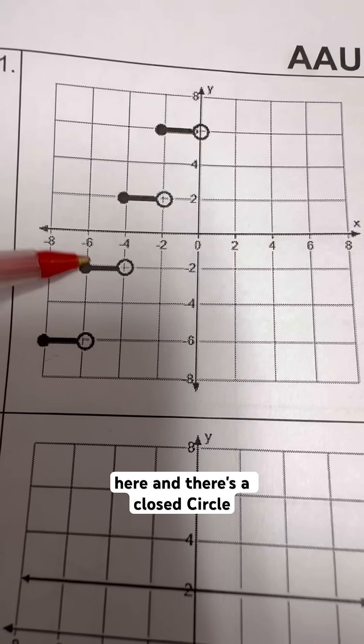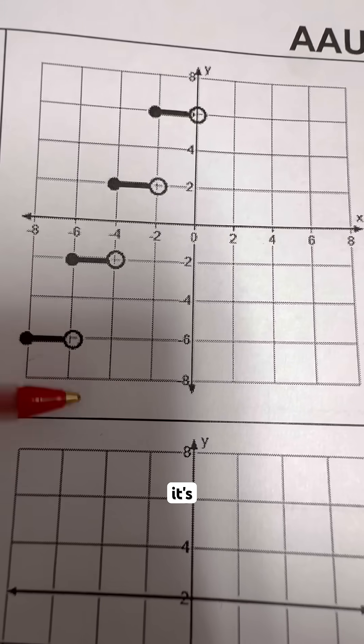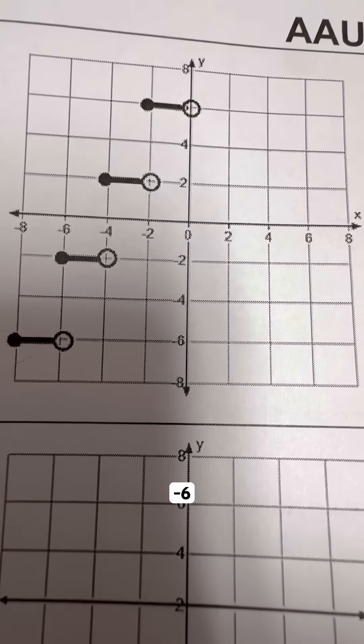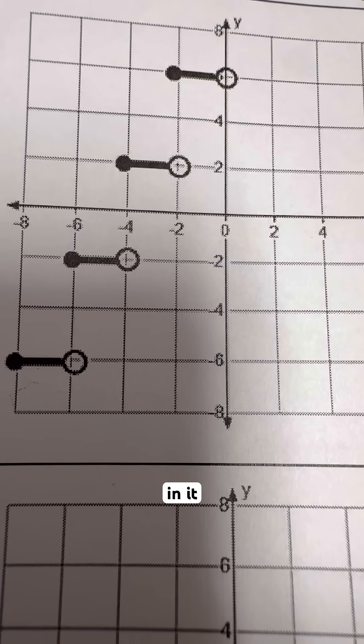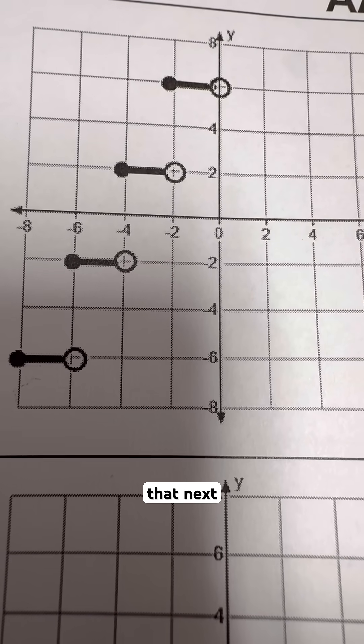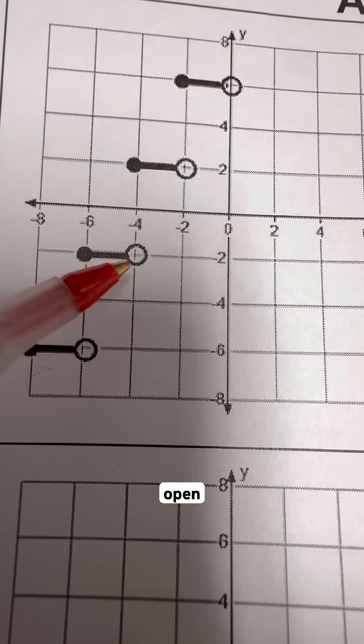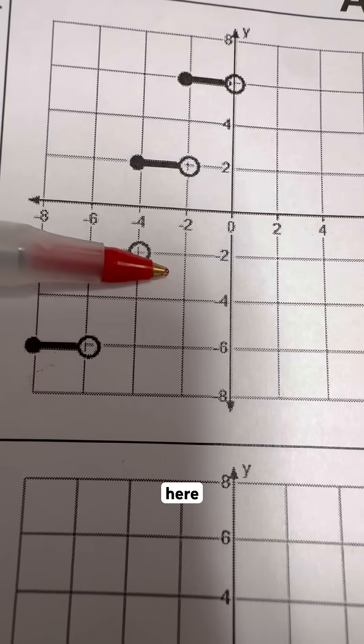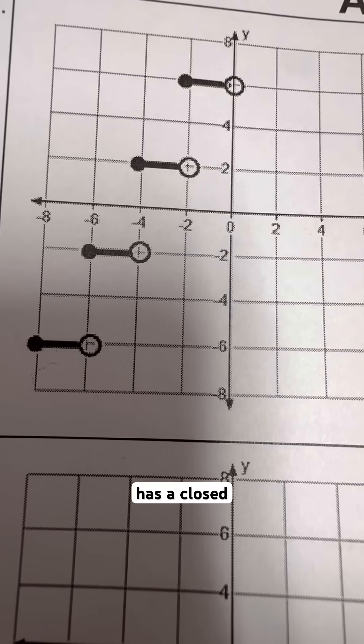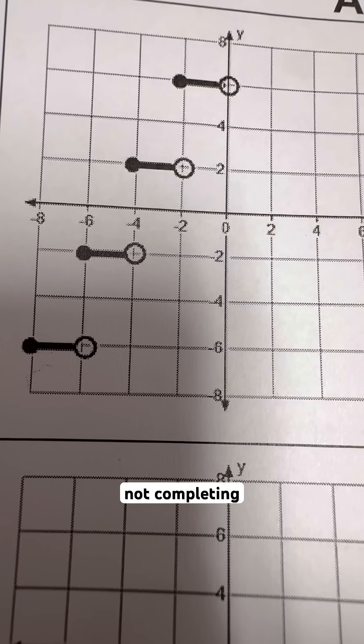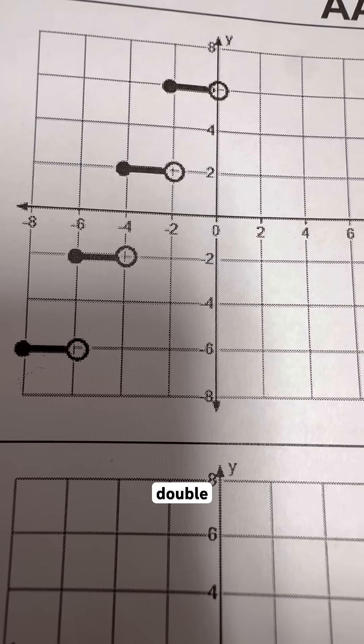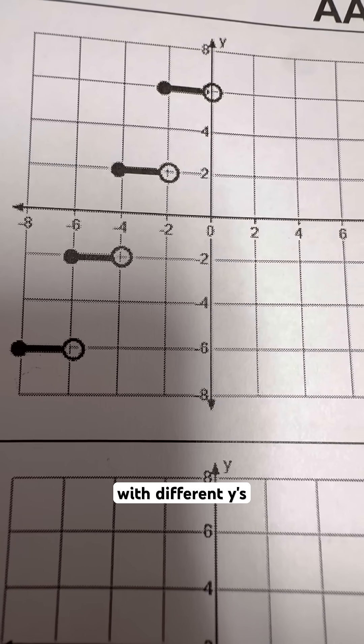Now, because this is an open circle here and there's a closed circle here, that x value negative 6 is still included in it. It's just included on that next step. So as long as the open circle is here and another x value is above it that has a closed circle, that's not completing a double set of x values with different y's.